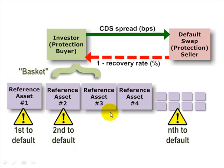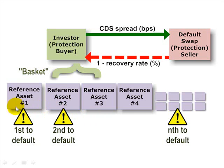We can have n as the attachment point — nth-to-default — and we can really choose any attachment point. It means the whole basket is triggered when that nth asset defaults, regardless of the sequence to get there. Naturally, a key variable here is the default correlation between these reference assets: are they tightly correlated or loosely correlated?